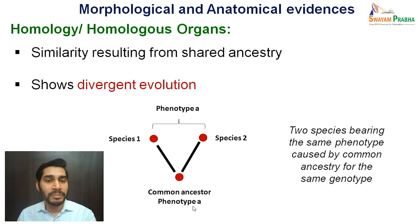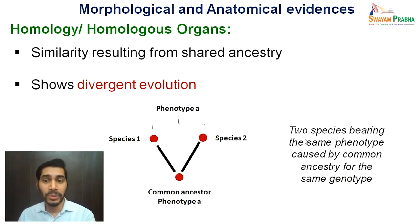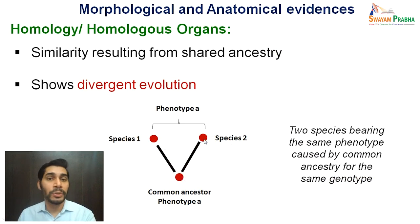Any two structures which might appear similar, they do have common origin, but they are performing different functions — these are called homologous organs or structures. If you have a species 1 organism and an organism belonging to species 2 which have a similar phenotype A, the probability is that they have a common ancestor. These two species bearing the same phenotype is because of common ancestry for the same genotype, but they perform different functions. Hence they diverged into two different species through evolution — this is called divergent evolution.